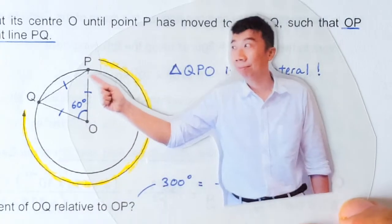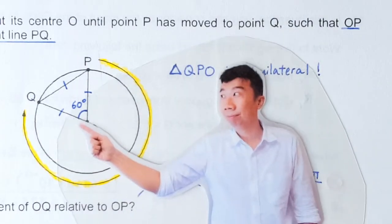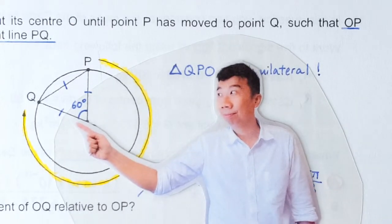So to go from OP clockwise to OQ, that's a rotation of 300 degrees. Not 60, it's this angle we're talking about, 300 degrees.